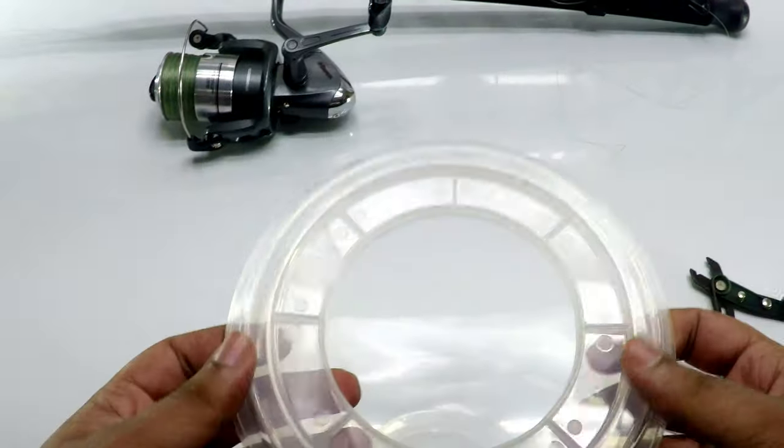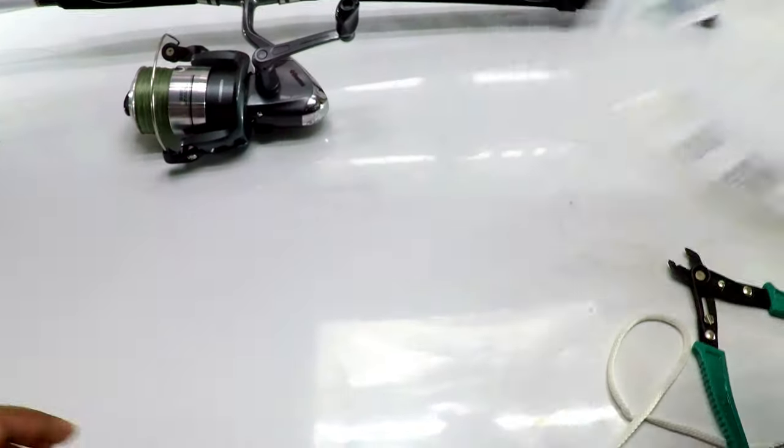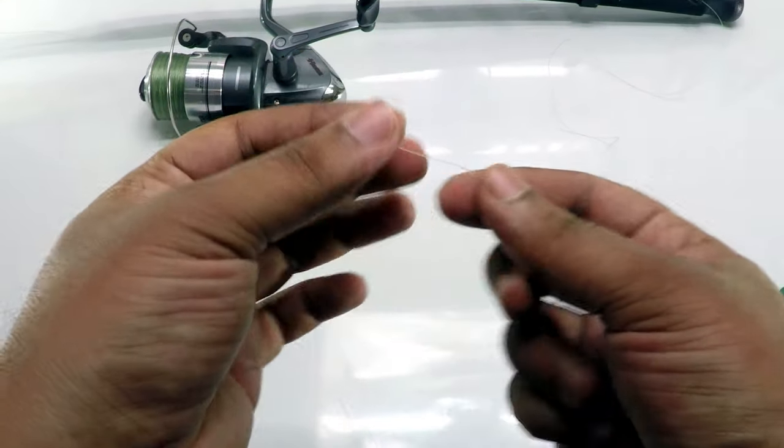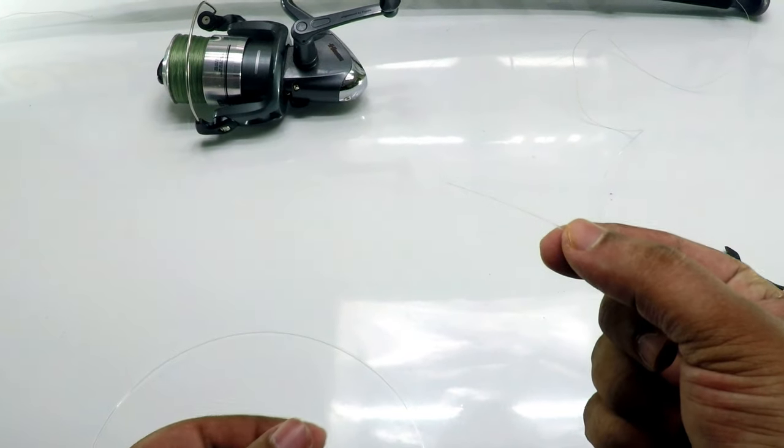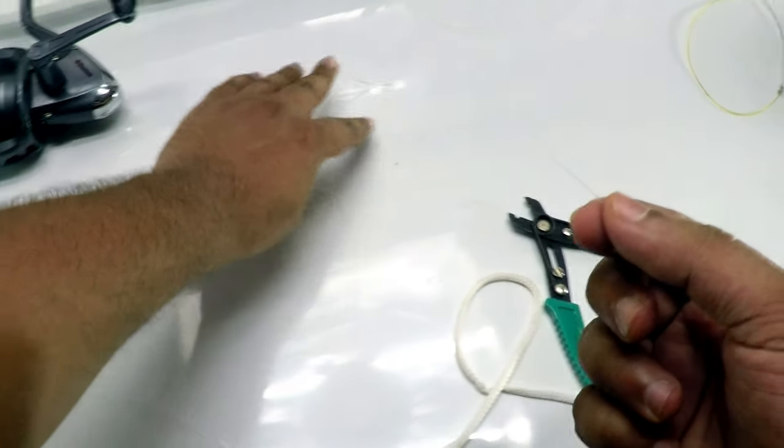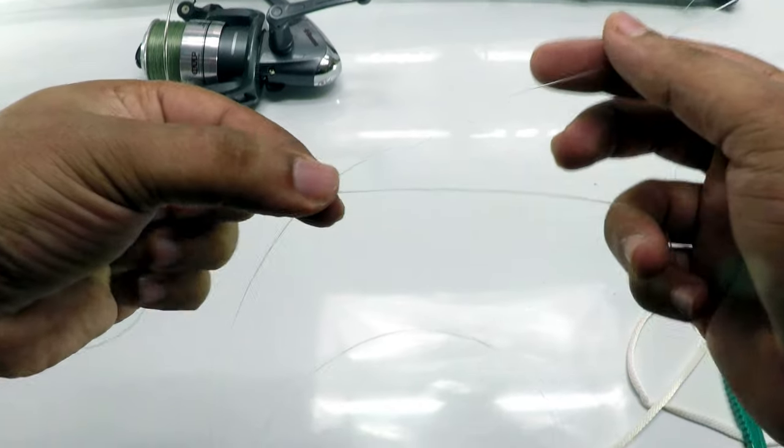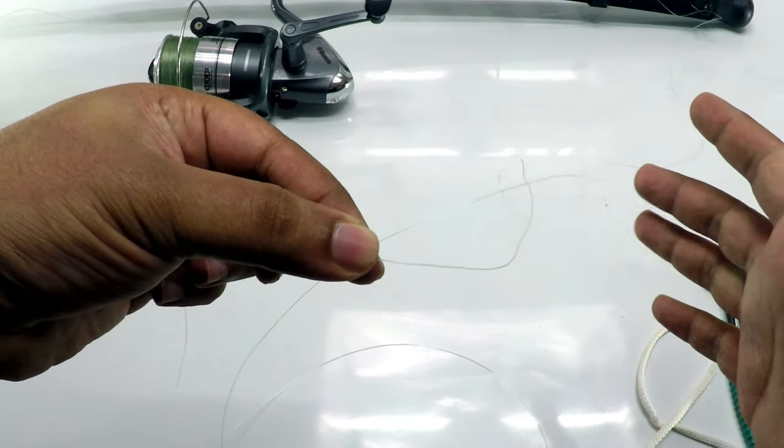If you don't want anything expensive, you can try the Suffix shock leader, which is a mono line—that's cheaper. But these are practically invisible in water. This is my main line and this is my leader.